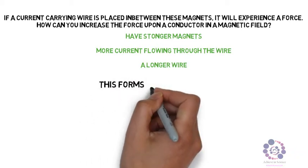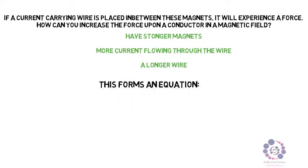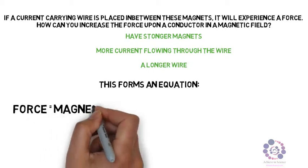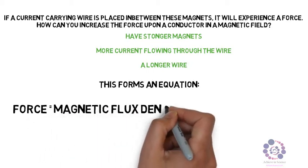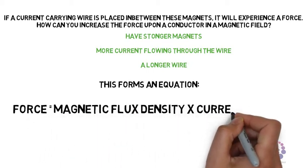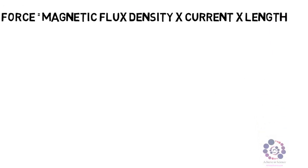Now all of this then is linked to an equation where the force is linked to the magnetic flux density multiplied by current multiplied by length. Again, this can be simplified into letter format.